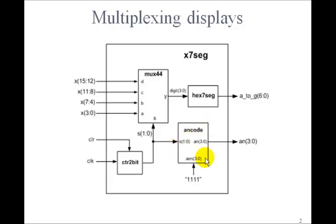We'll also have to modify our AN code so that when this is 0, 0, then we select only digit 0 by bringing AN0 low, and so forth. We're also going to add a new input to this AN code called aEnable so that we can control if we display anything on a particular digit.